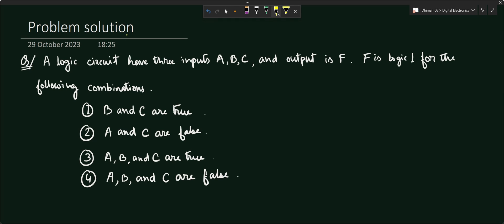Dear students, welcome to this digital electronics tutorial series. In this video we will solve a problem on logic circuits, logic inputs, logic variables, and logical expressions. We are asked to find the expression for output F, where we have three inputs A, B, and C.